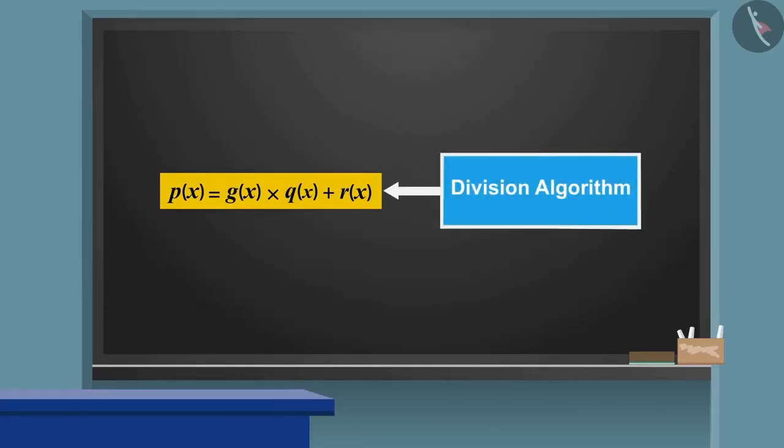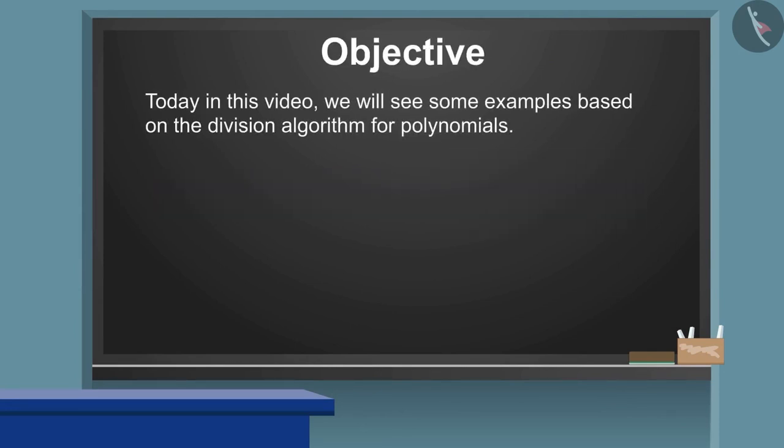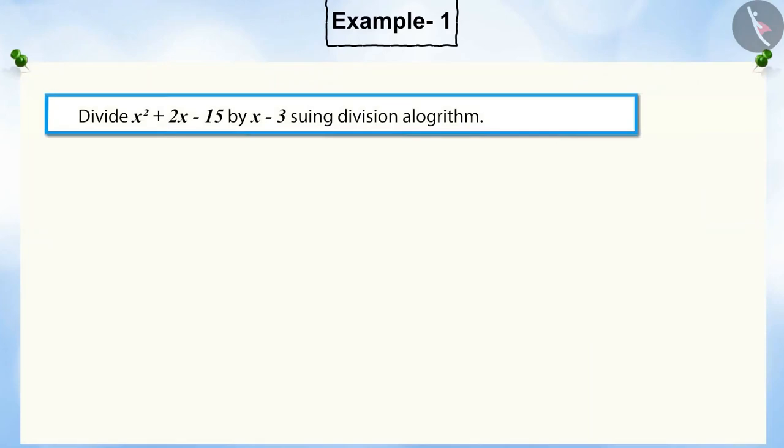In our previous video, we learned about the division algorithm for polynomials. Today, in this video, we will see some examples based on this. Divide x squared plus 2x minus 15 by x minus 3 using the division algorithm.